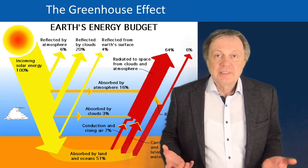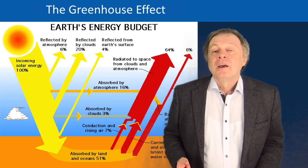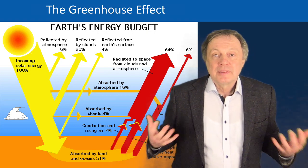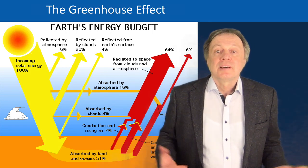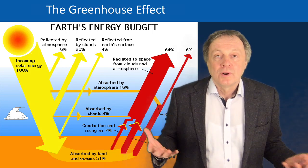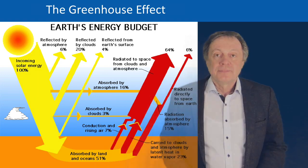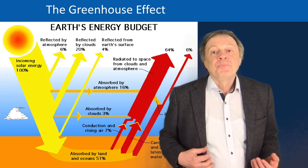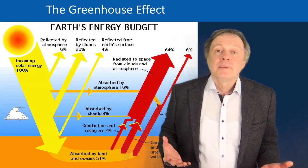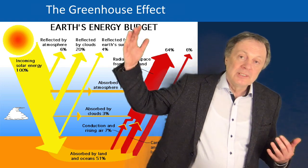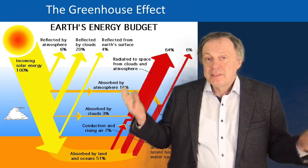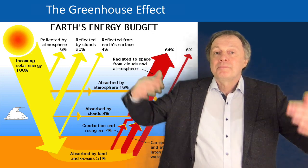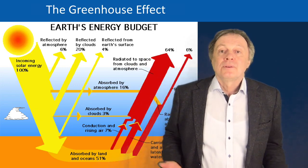By absorbing infrared radiation, the gases become warm and then become themselves a black body radiator. So they are warm and therefore they irradiate infrared radiation themselves. This infrared radiation only partially goes out — part of it is reflected back. And that is finally the effect of the atmosphere: the radiation which is emitted and supposed to leave the earth is scattered back by the atmosphere and warms up the earth in addition.